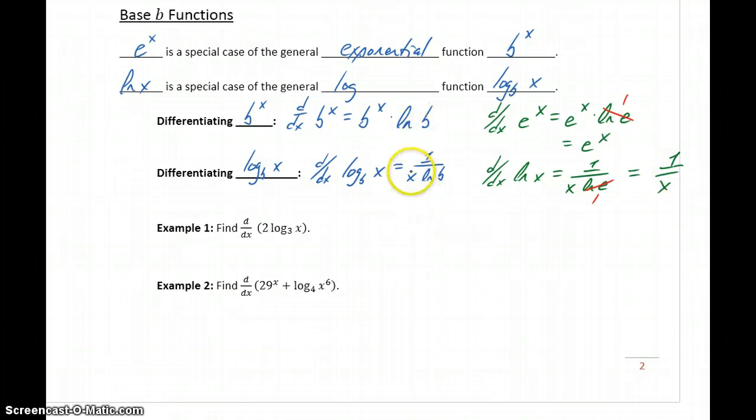These are two just more general forms of those same derivative properties we've already established that we'll need to make use of whenever we want to find the derivative of a log function or exponential with a base besides e.